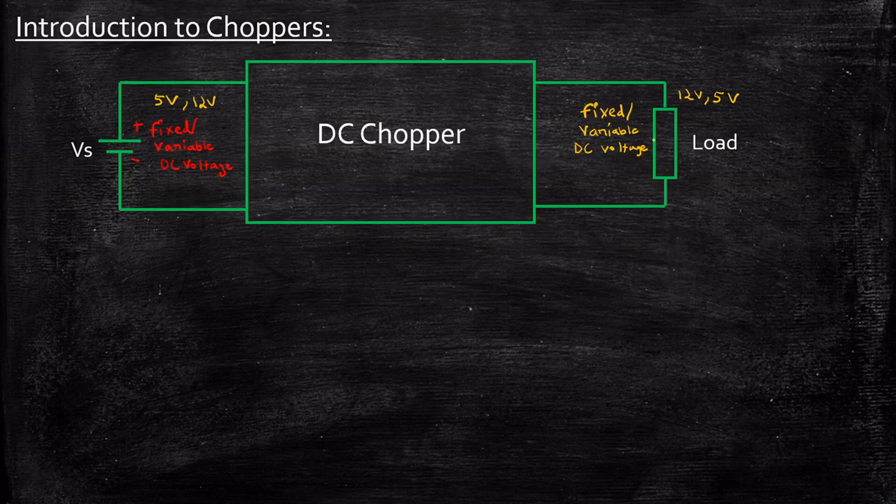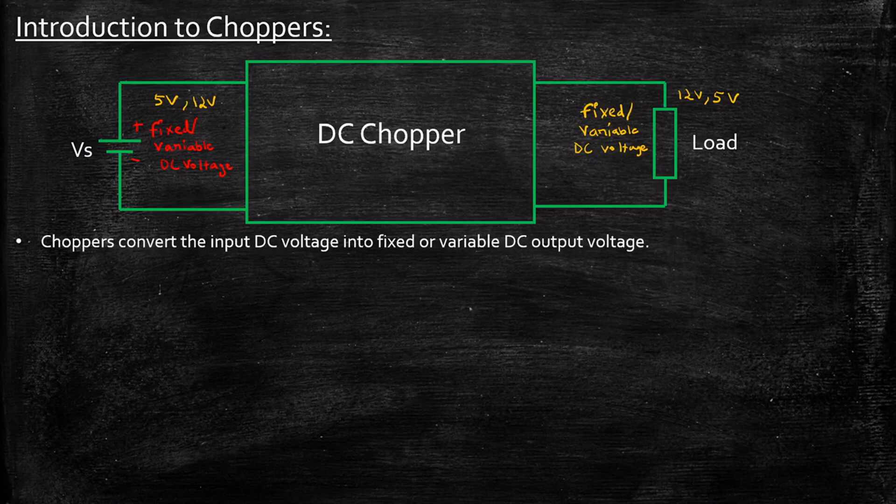So you will be able to convert fixed or variable DC input voltage to fixed or variable DC output voltage. You can also step up or step down the input voltage to a level that is required. So chopper is a circuit that is used to convert fixed or variable DC input voltage to fixed or variable DC output voltage.